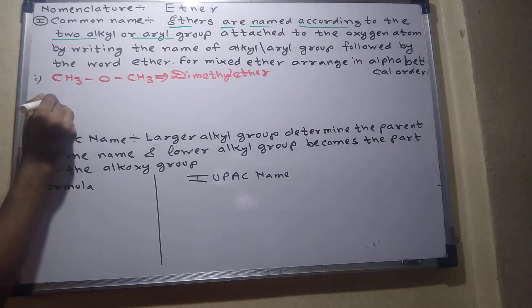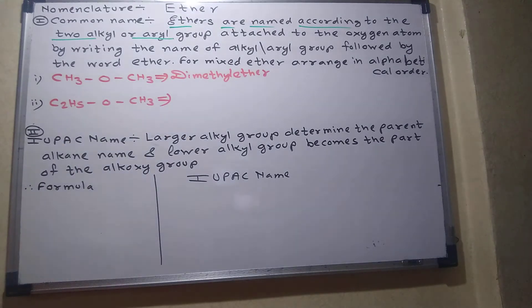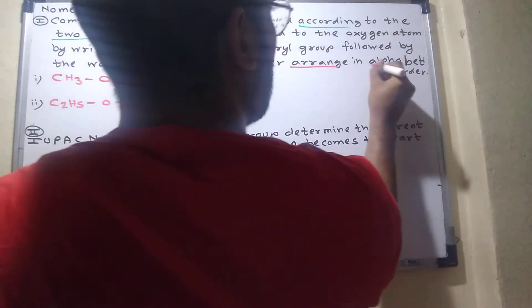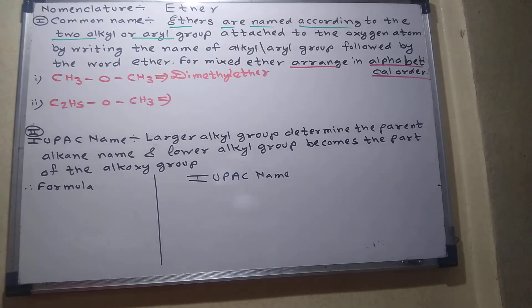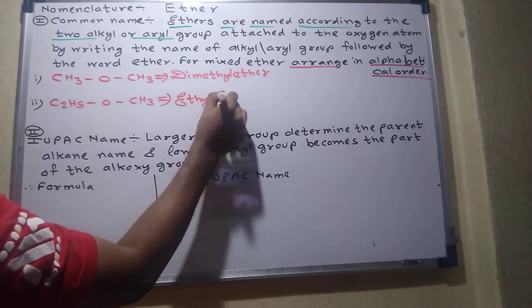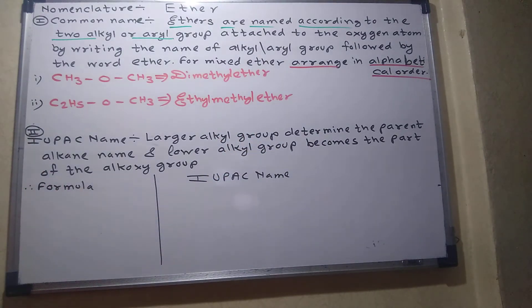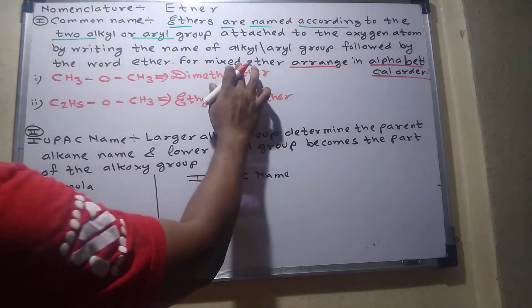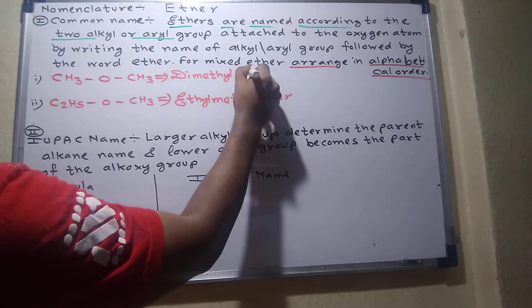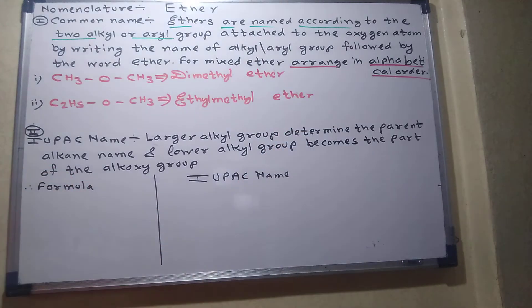And suppose C2H5-O-CH3, this would be ethyl methyl ether. So when we write ether, there will always be space. Remember that. When we say ether, there will always be space.